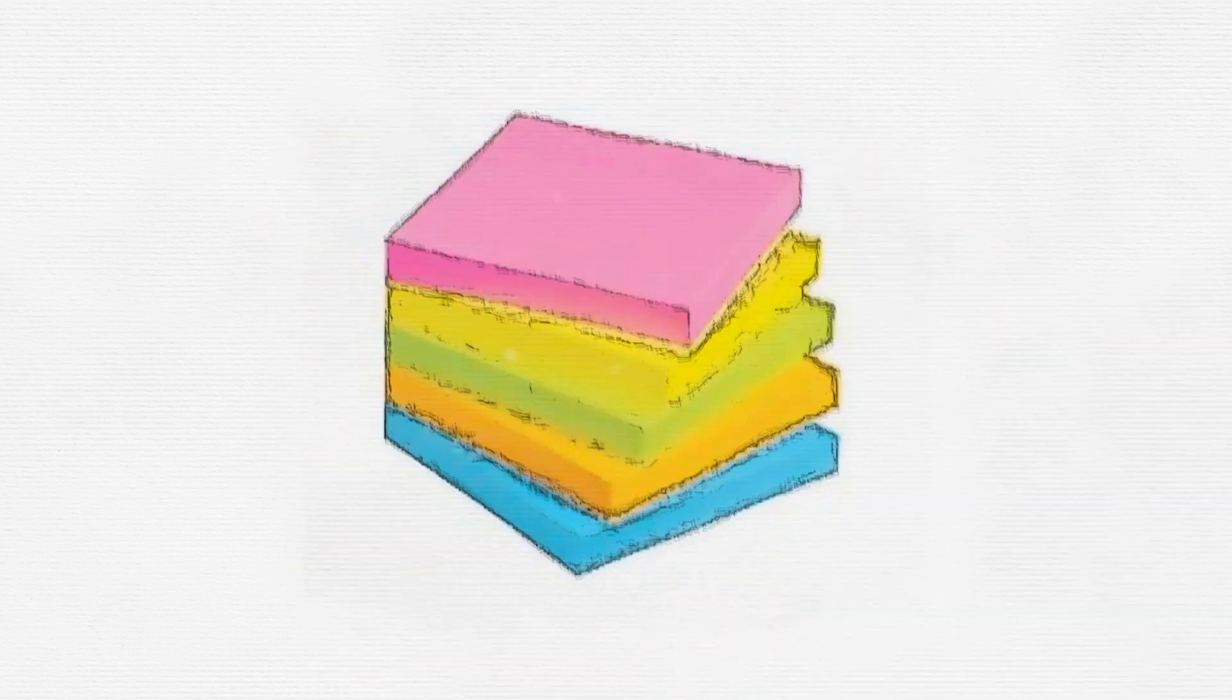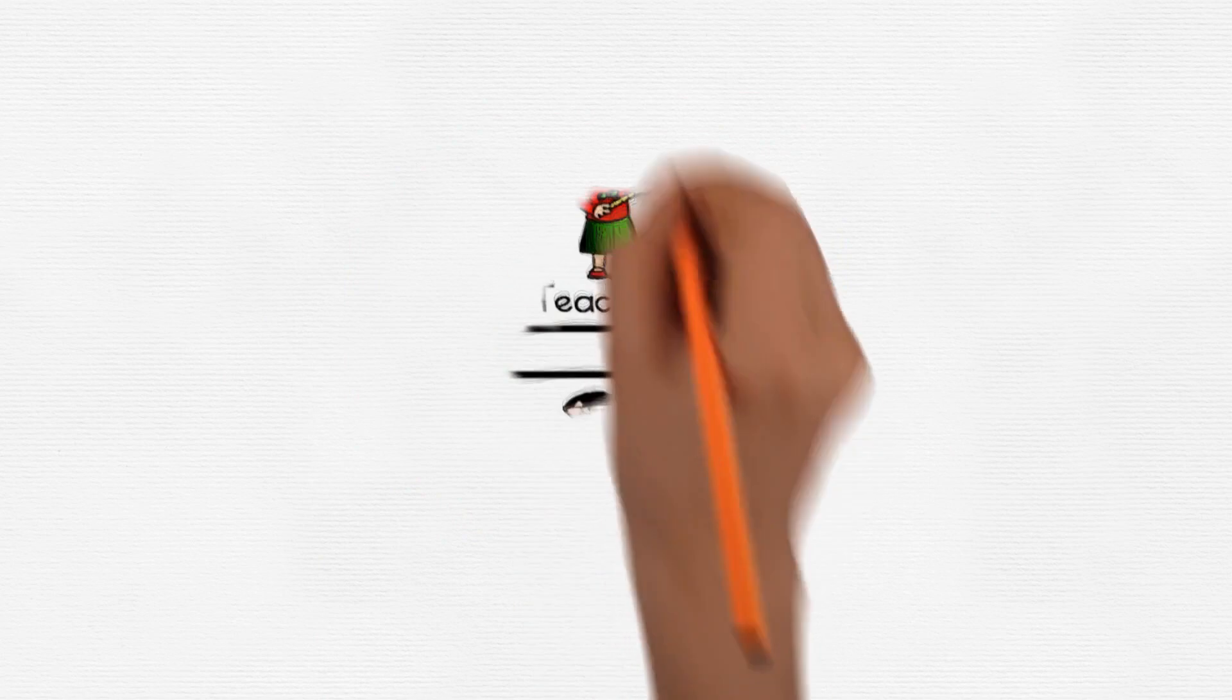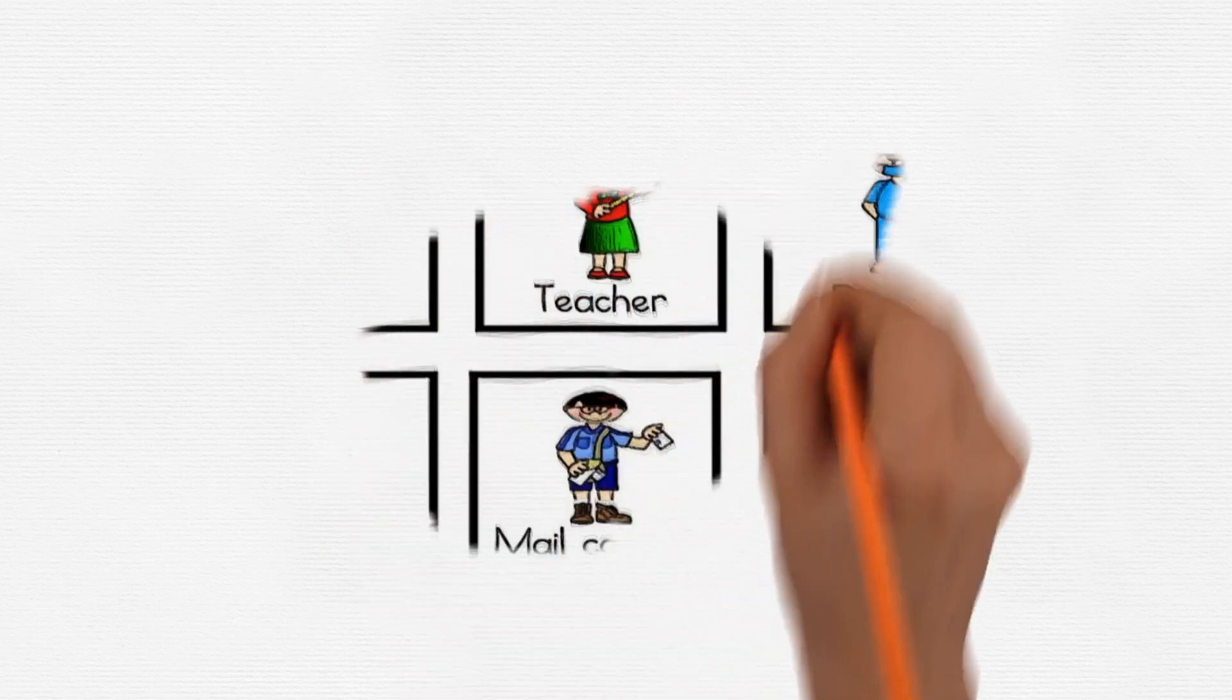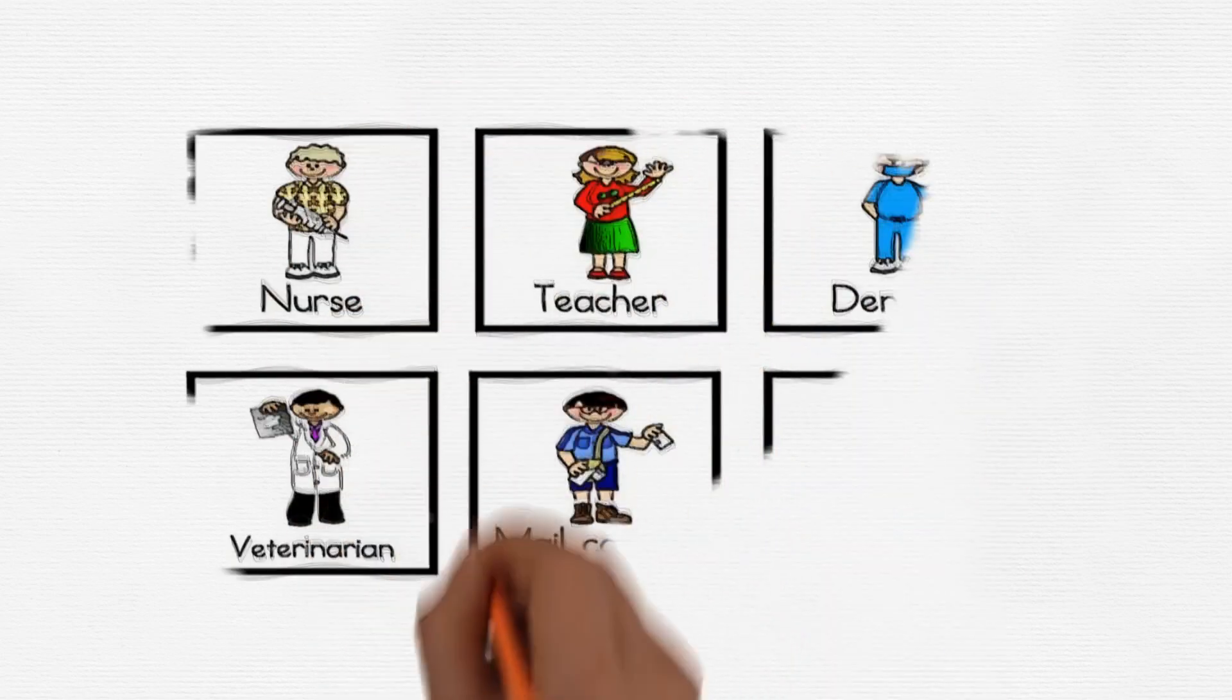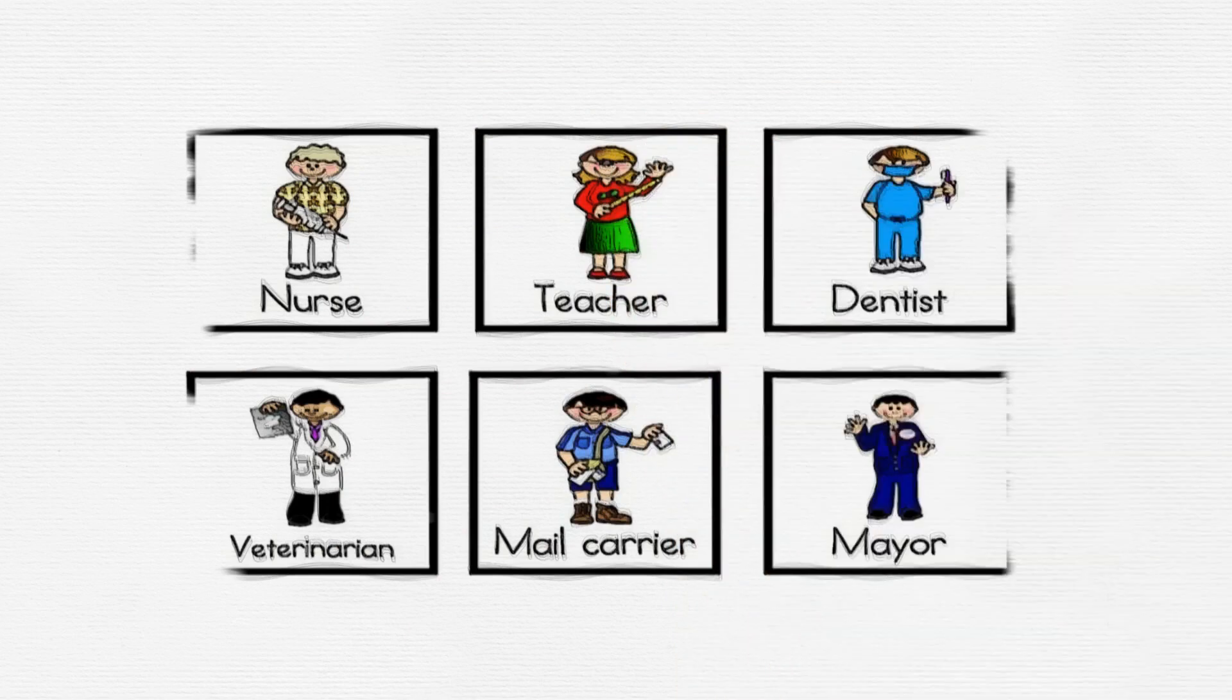Now, it's your turn to show what you've learned. Each of you will get a sticky note. Draw a picture of your favorite community worker. It can be one we talked about or a new one you think is important.